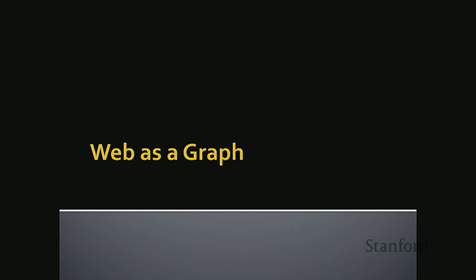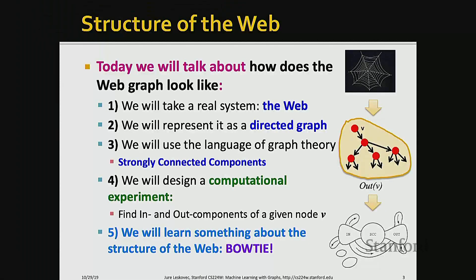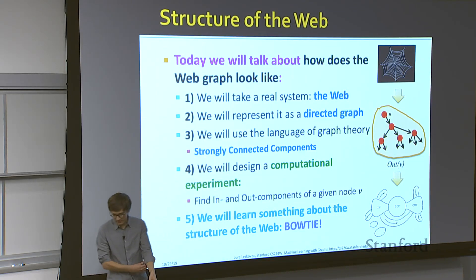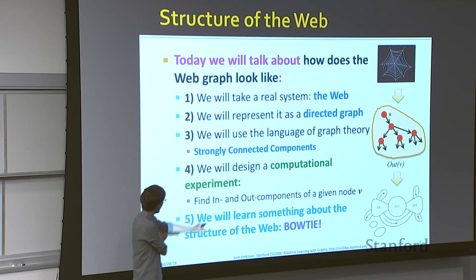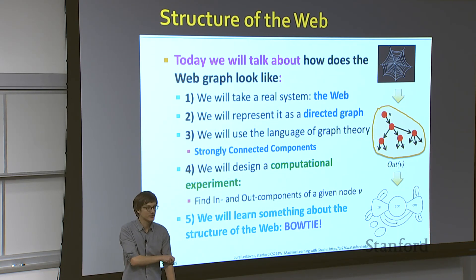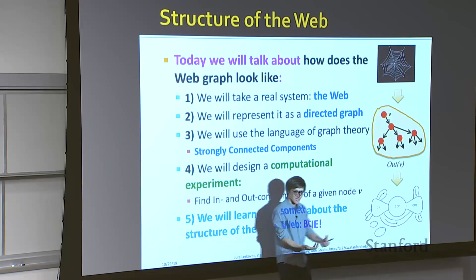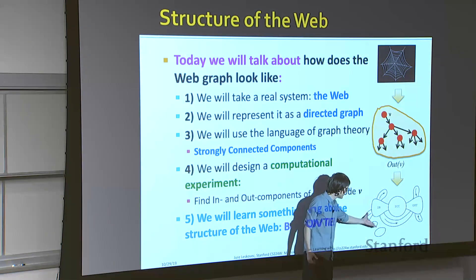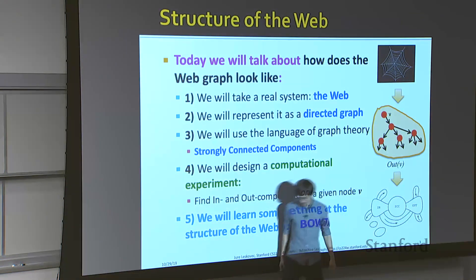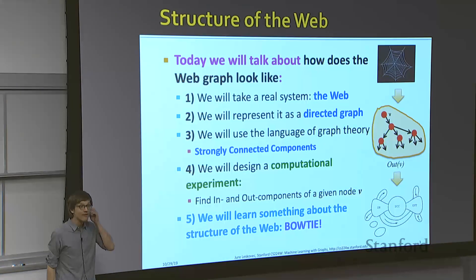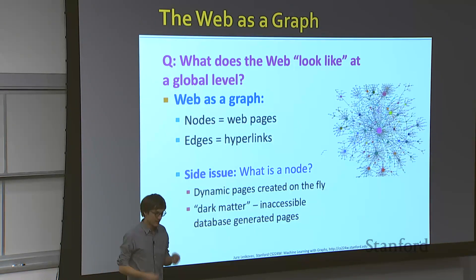We will start by looking at the web as a graph. The idea is to take a real system — the web — and represent it as a directed graph. We'll use the language of graph theory in terms of strongly connected components and design a computational experiment to learn about the structure of the web. The web will have this bowtie structure, like a bowtie you put on your neck.